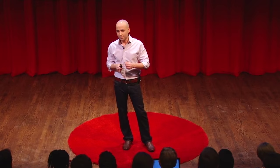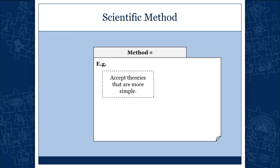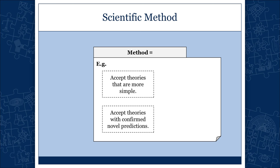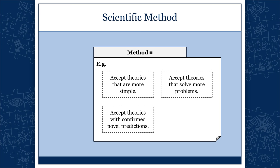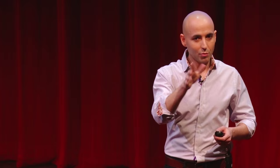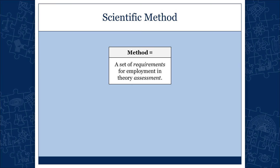Here are some examples of methods. Accept theories that are more simple. Or accept theories that provide confirmed novel predictions. Or accept theories that solve more problems. Or accept theories that are precise and accurate. All these are examples of methods. I'm not saying this is what we actually employ in theory assessment — that may or may not be the case — but these are some examples of methods we may employ.